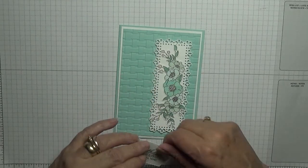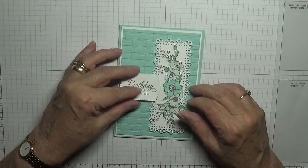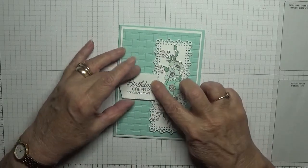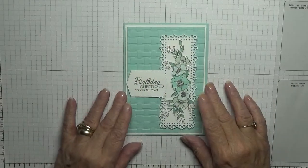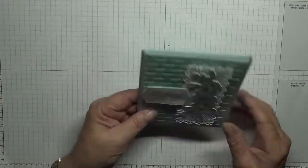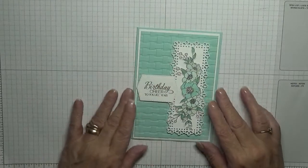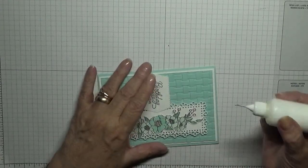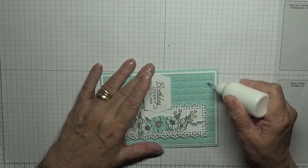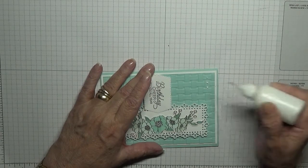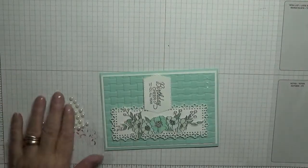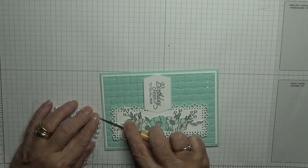And this we will place just there. That's great. Now all we've got left to do is add some pearls to the top. So I'm just putting three blobs of glue on so I can add three pearls.